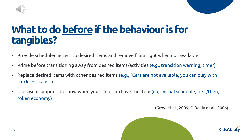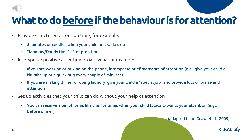For behaviors maintained by attention, provide structured attention time — for example, five minutes of cuddles when we wake up. Intersperse positive attention proactively: if you're working or talking on the phone, give your child a thumbs up or a quick hug. When making dinner or doing laundry, give the child a special job and provide lots of praise and attention while still doing your chore. Set up activities that your child enjoys that they can do without your help or attention, and reserve a bin of special items for when your child typically wants your attention.